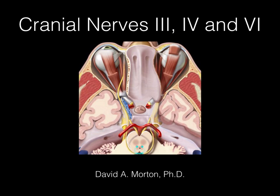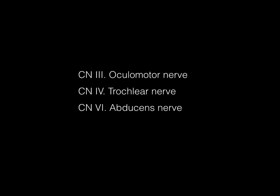We're now going to talk about cranial nerves 3, 4, and 6. I put these together because cranial nerves 3, 4, and 6 all innervate the extraocular muscles. Cranial nerve 3 is the oculomotor nerve, cranial nerve 4 is the trochlear nerve, and cranial nerve 6 is the abducens nerve.